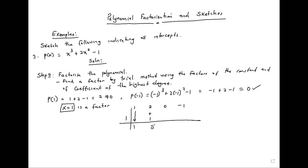It is negative 1. So we drop a 1; we have negative 1 here, add to get 1, negative 1, add to get a negative 1, multiply by 1, add to get zero.